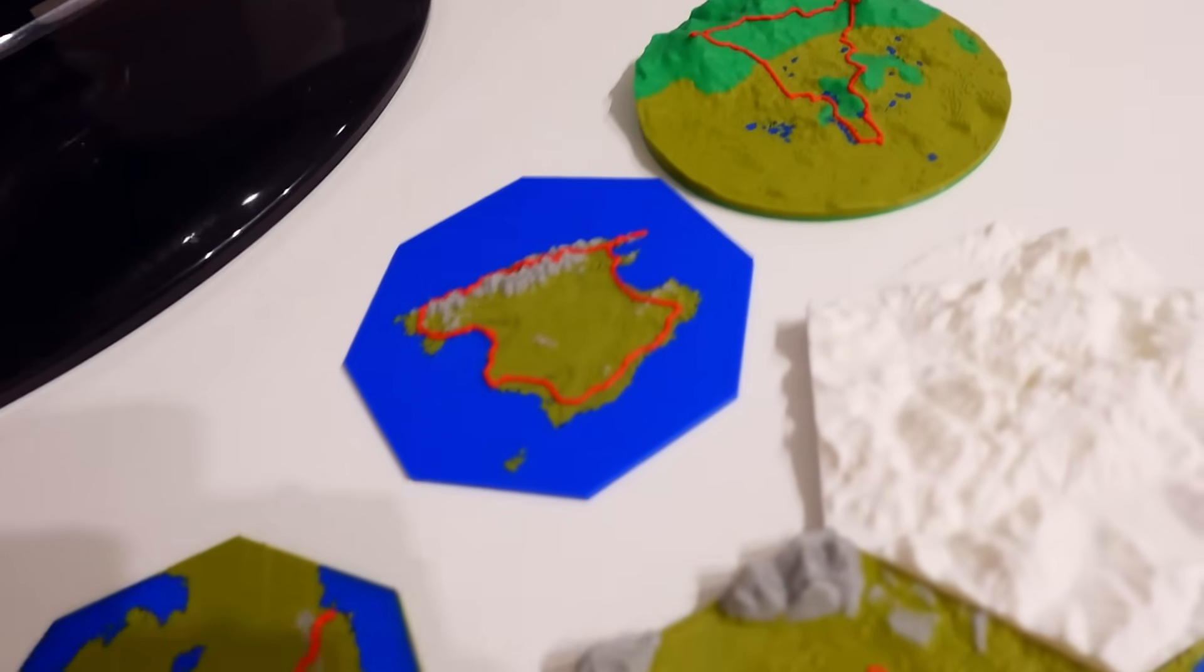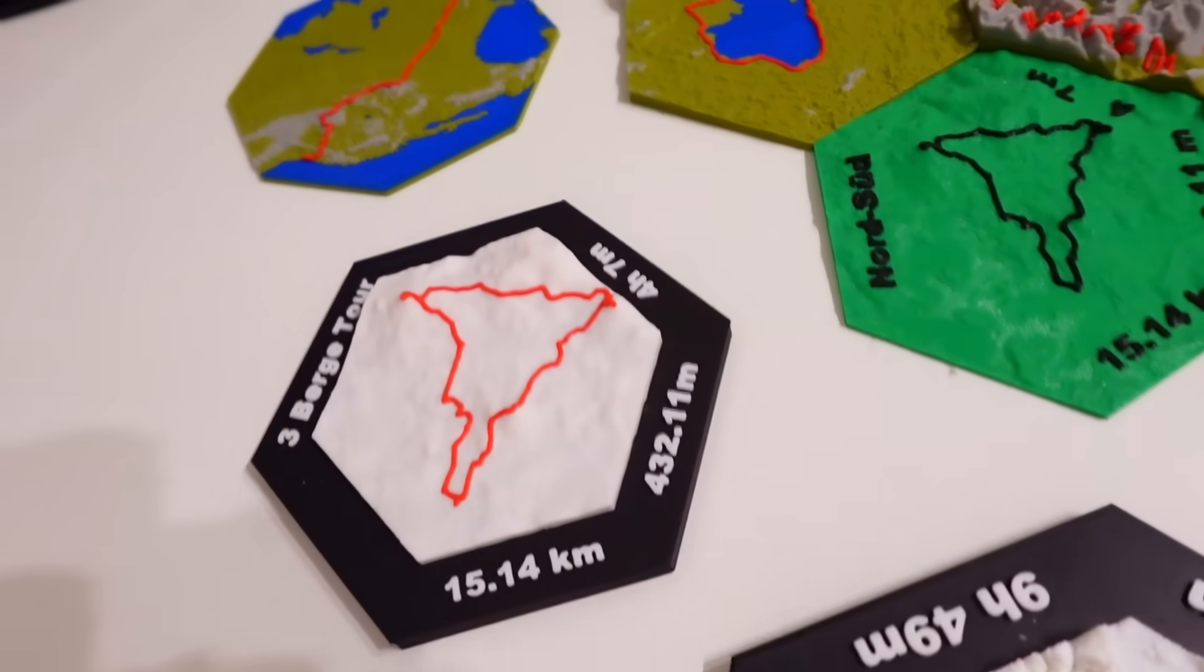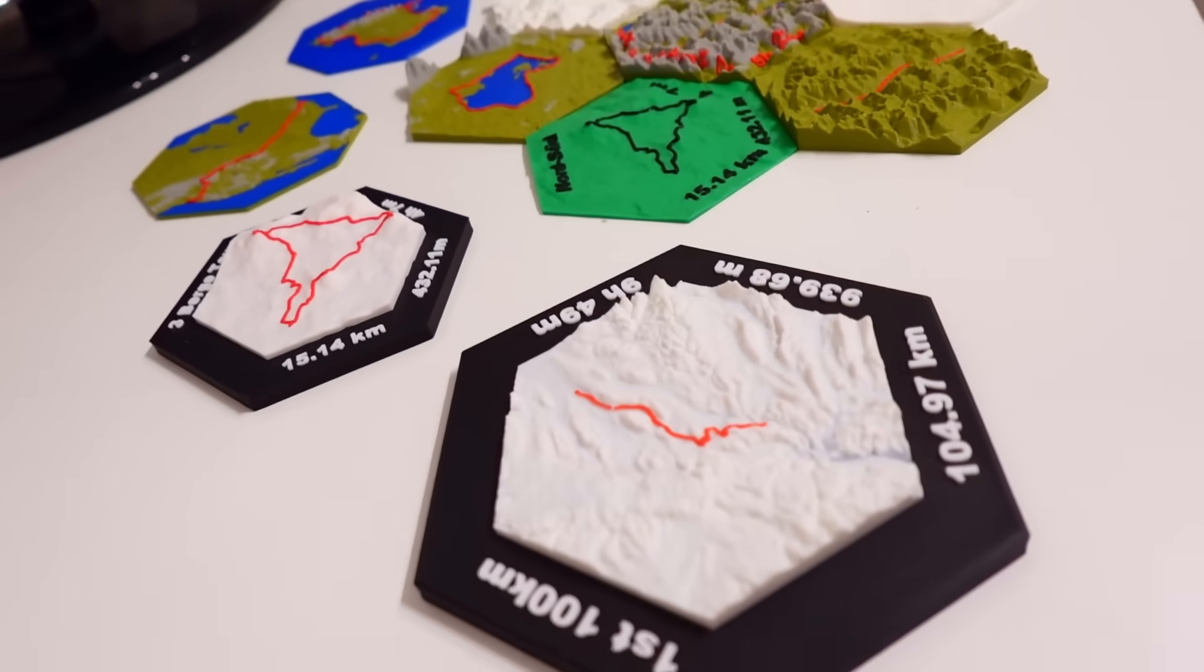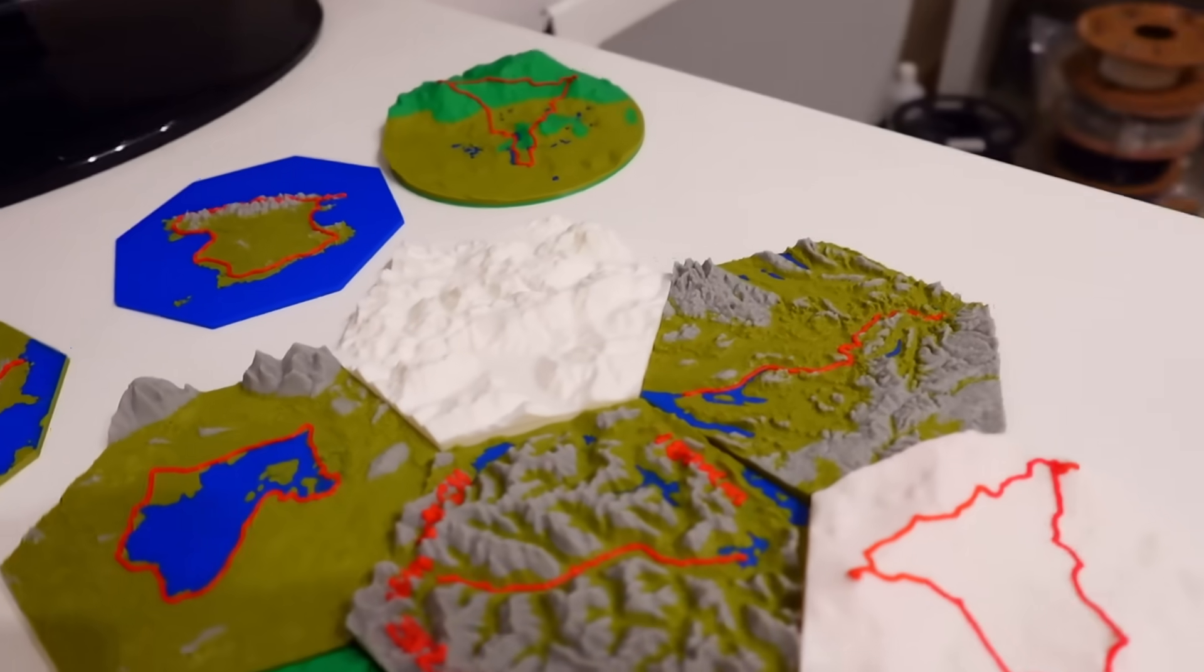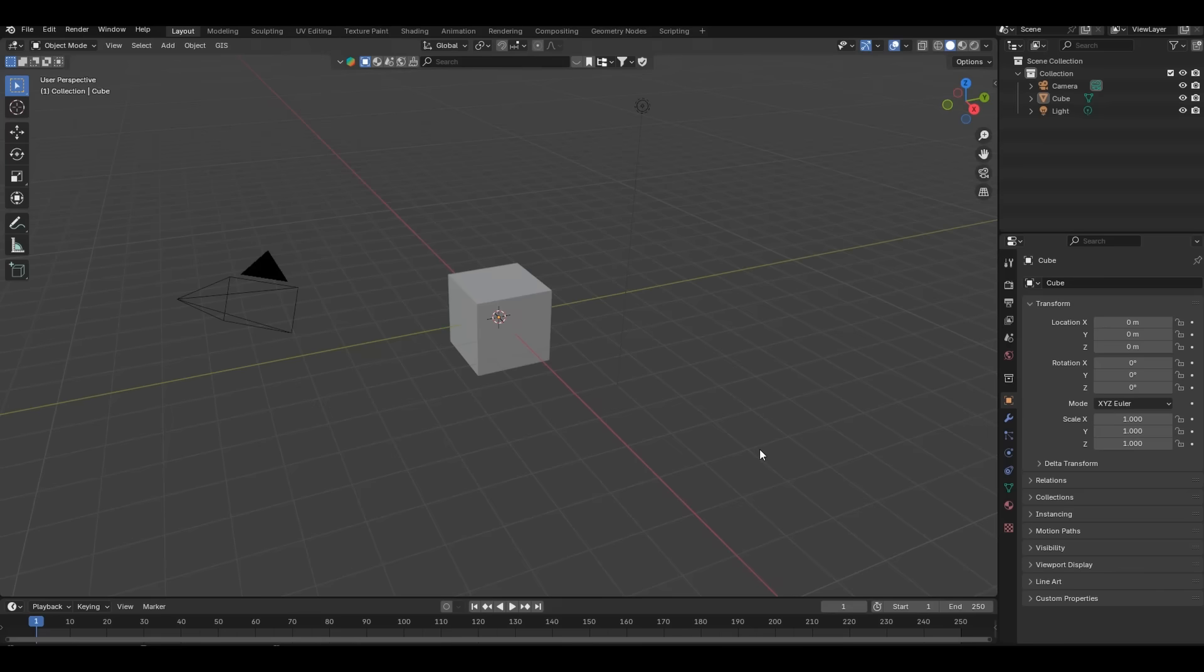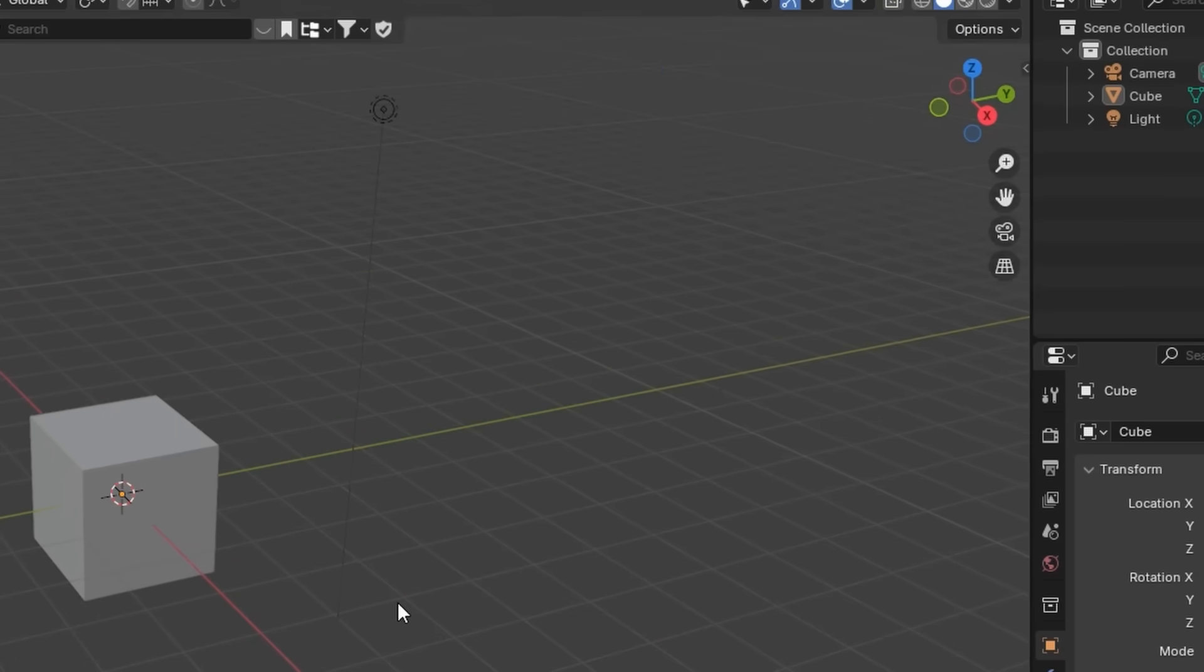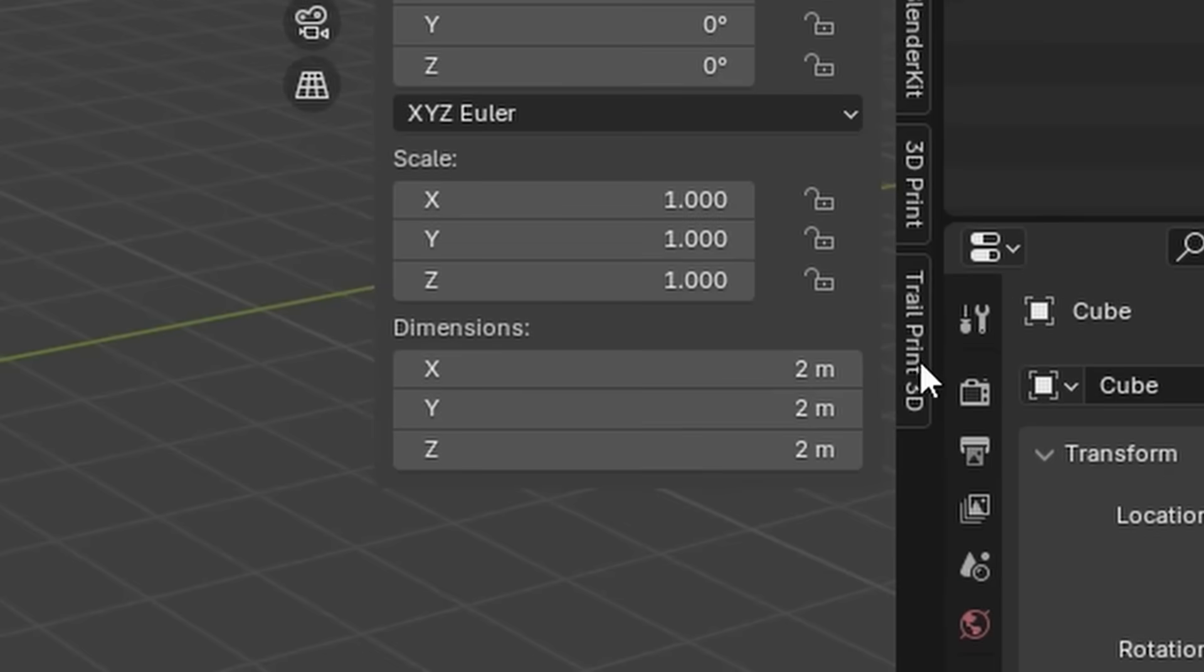You may have already noticed that some of the maps are slightly different. This variation is due to the customization options available in the add-on. Let's take a closer look at the add-on itself. Inside Blender, once installed, you can press N to open up the sidebar. Under the Trail Print 3D tab you can see all the parameters you can change.